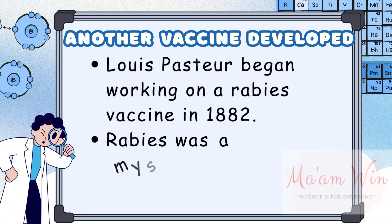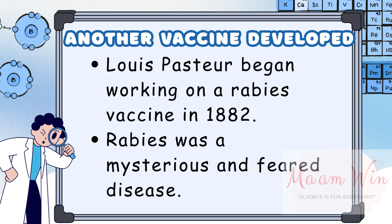Louis Pasteur developed the first rabies vaccine after deciding to tackle the disease in 1882. Rabies, a mysterious and terrifying illness, had long captured public fear. Though the disease-causing agent, later identified as a virus, was too small to see, Pasteur conducted experiments on rabbits, transferring the infection between them. To weaken the agent, he dried the spinal cords of the infected animals. This process didn't attenuate the agent as he intended, but actually neutralized it, unknowingly creating an inactivated vaccine. This marked the beginning of a new class of vaccine based on neutralized agent.